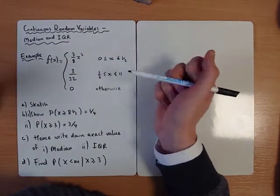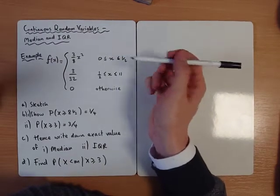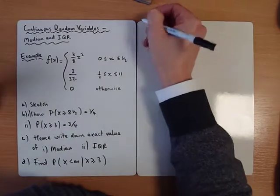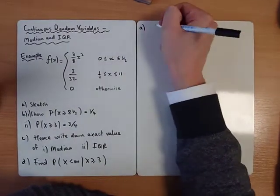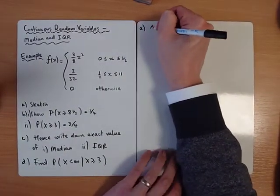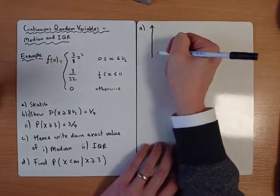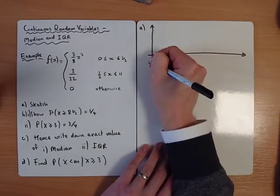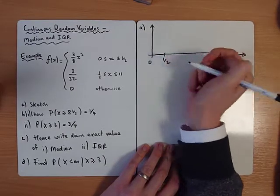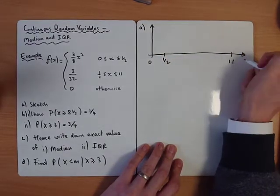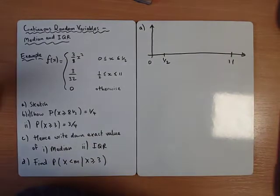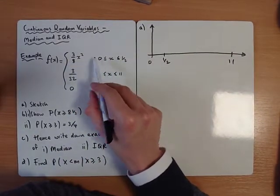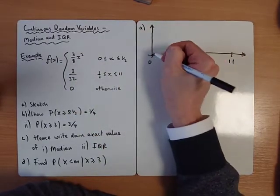Let's have a look at an example. This one we're given the function which is defined over two different functions depending on which x values we're working with. First part we're asked to sketch, but we should always sketch it anyway. The function goes between 0 and a half, and then between a half and 11. We've got a quadratic between 0 and a half. If I sub 0 in I get 0, so I start at the origin.